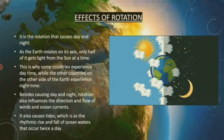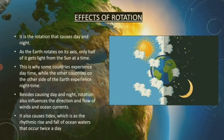Besides causing day and night, rotation also influences the direction and flow of winds and ocean currents. Ocean currents is a continuous directed movement of seawater generated by a number of forces acting upon the water, like Earth's rotation. It also causes tides, which is the rhythmic rise and fall of sea level waters that occurs twice a day.